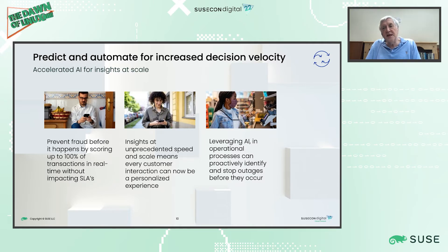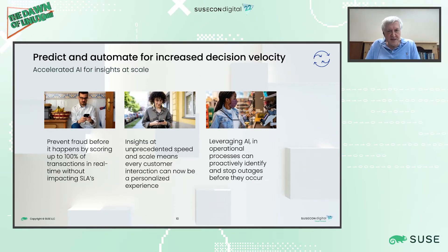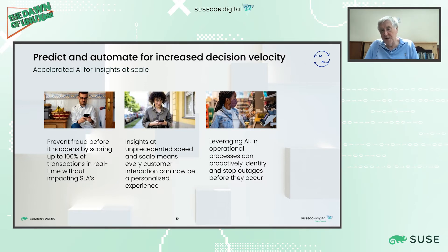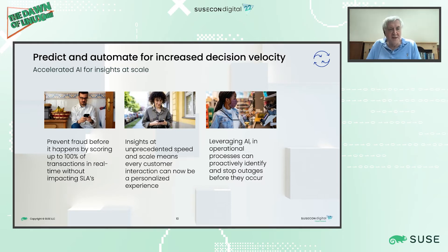With the Z16's on-chip AI inferencing capability, here are three use cases. First, protecting against fraud before or as it happens by scoring up to 100% of transactions in real-time — obviously of interest to banks, insurance companies, governments, and healthcare.